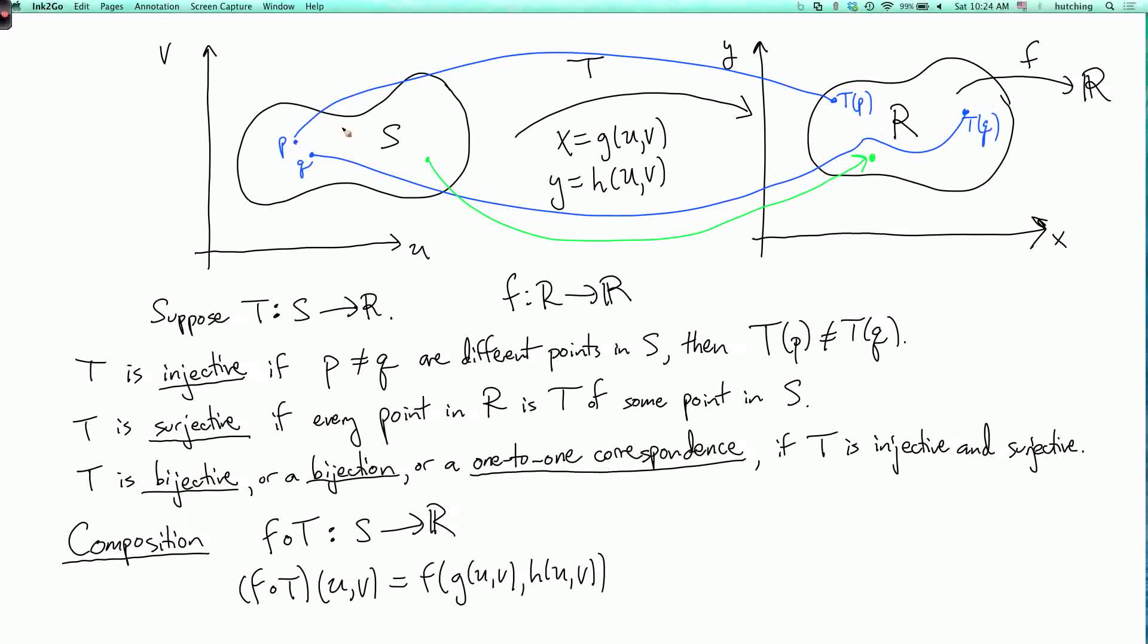And then the question we want to ask in change of variables is the following. So suppose T is a bijection. So we have the double integral over R of F with respect to area. And I'd like to rewrite this as an integral over S. Because maybe in the x-y coordinates this integral is difficult to evaluate and I want to change the coordinates to make it easier.